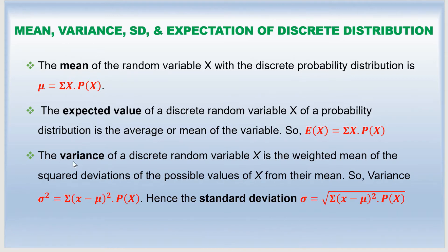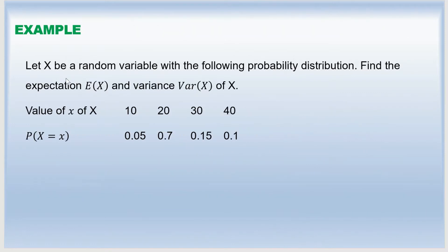The variance of the discrete random variable x is the weighted mean of the squared deviation of the possible values of x from the mean. It is calculated using the formula: sigma squared equals the sum of (x minus mean) squared times P(x). Taking the square root of the variance gives the standard deviation.